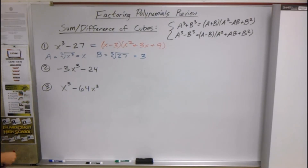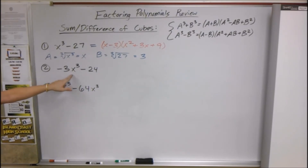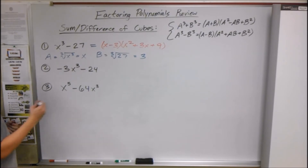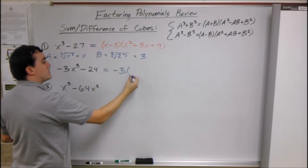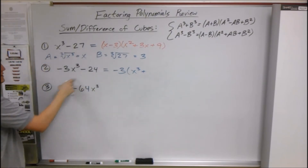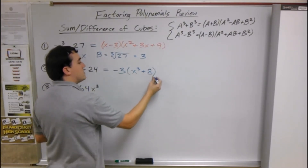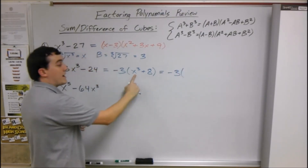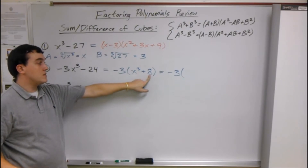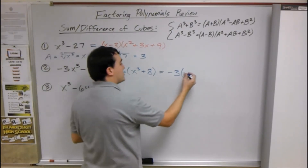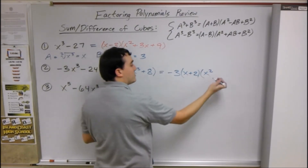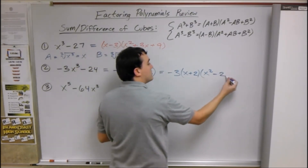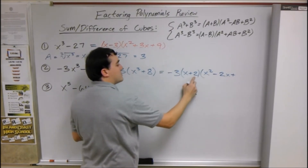We're going to do the same thing for the next one, but always look at whether they have anything in common, and it's easier when the first term is positive. We can take out a negative 3, which gives us x³ plus 8. The negative 3 stays out front. Our a is x and b is 2 because the cube root of 8 is 2, so we have (x + 2). Then square the first: x², opposite sign: minus, multiply: 2x, and square the last: 4. So we get -3(x + 2)(x² - 2x + 4).